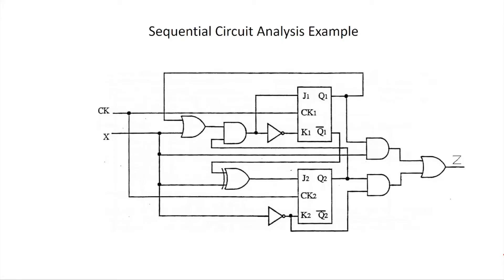Hello, today we will be doing an example on sequential circuit analysis using the JK flip-flop. When we have a problem like this and we're trying to analyze it, the first thing we ask ourselves is: is this a Mealy or Moore machine? To make that decision, we look at the output Z and the inputs coming into it. If the expression for Z uses the present state and external input, it's a Mealy model; if it uses only present state, it's a Moore model.